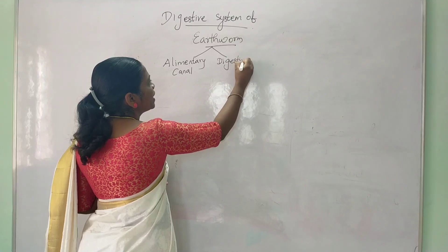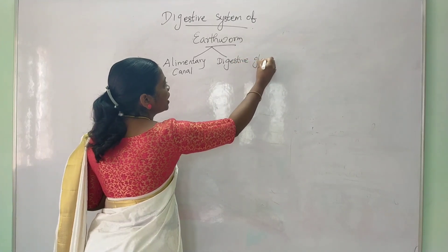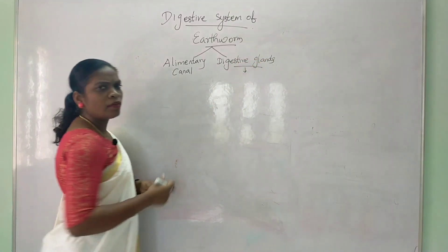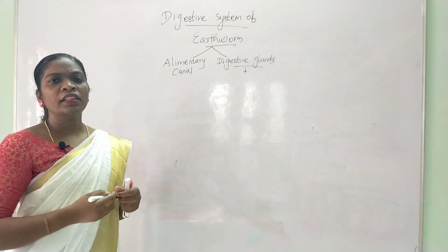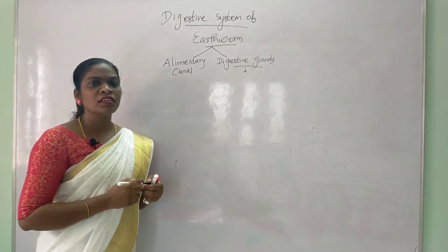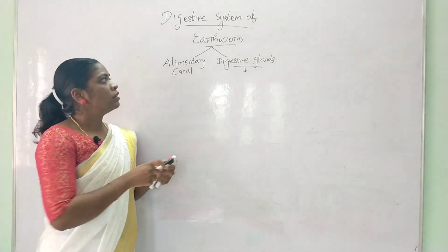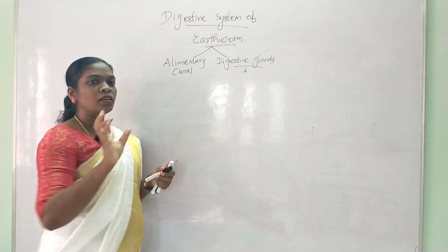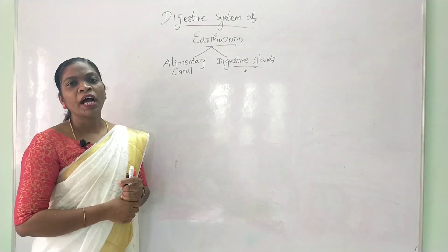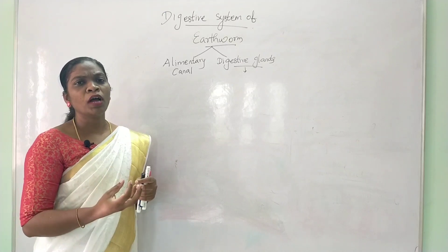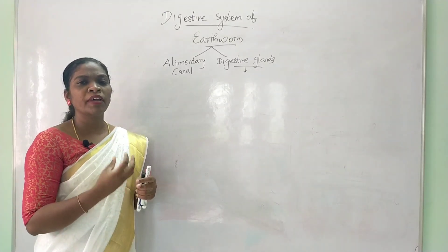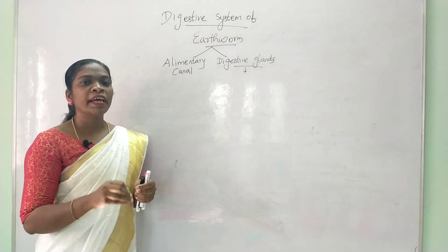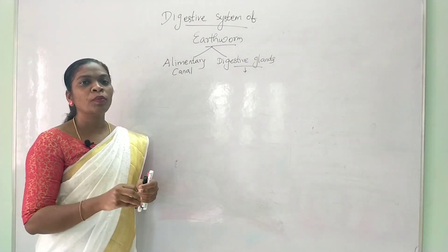The next division is digestive glands. When food is digested, the enzymes will support the digestive glands. The digestive system of the earthworm is complete because the earthworm's organs are developed properly, allowing the process of digestion to be complete.